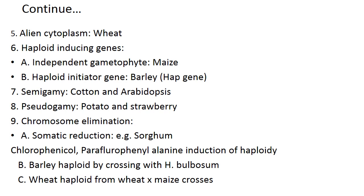Then barley haploidy by crossing with bulbosum and wheat haploid by wheat into maize cross. These two techniques I will explain in future slides.